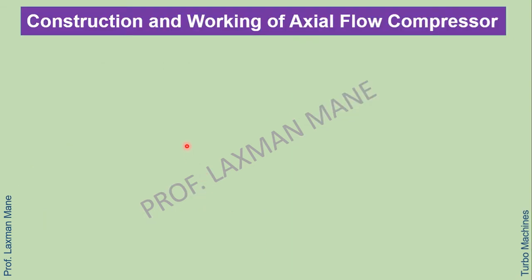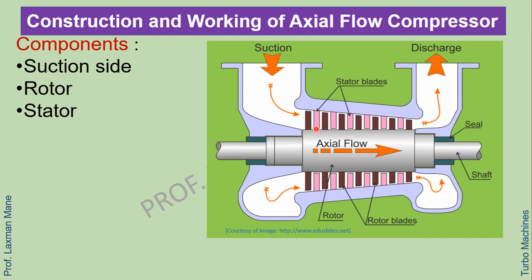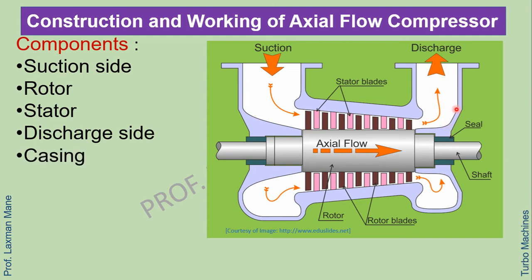Construction and working of axial flow compressor. From this image we can see different components of axial flow compressor: the suction side, the rotor which is the rotating part, the stator which is the fixed part, the discharge side, and the casing.